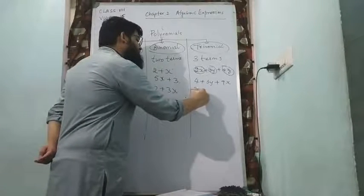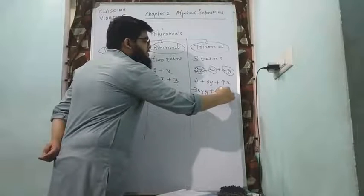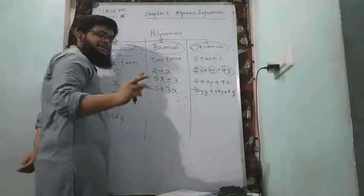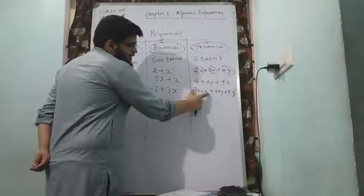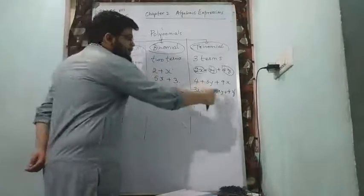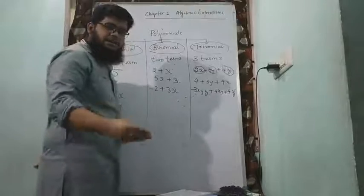Or minus 3xyz plus 4xy plus 4z. If I have something like this, this is also an example of trinomial. Minus 3xyz because there is no plus or minus sign in between, it should be treated as one term. 4xy should be treated as another term, and 4z should be treated as third term. That is an example of trinomial.